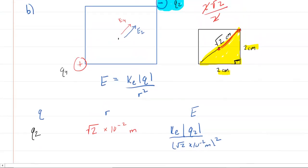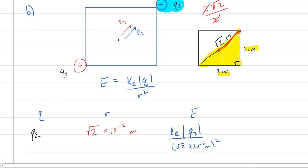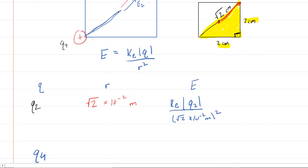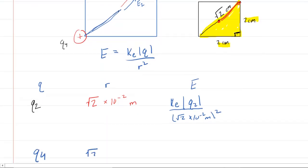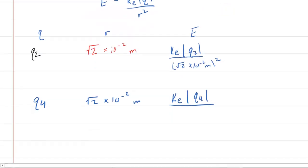Let's look at the electric field from Q4. Now again, we need the distance from Q4 to the center of the square. That's going to be the same distance. It's just going to be half of that diagonal. So luckily, we can actually come in here and just do the same thing. It's going to be radical 2 times 10 to the minus 2 meters. For the electric field, we'll have K sub E multiplied by the magnitude of the charge, and then divided by that same distance squared.